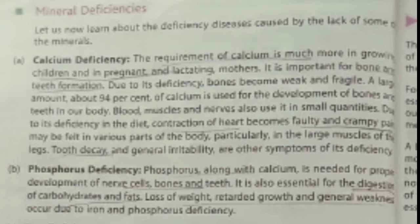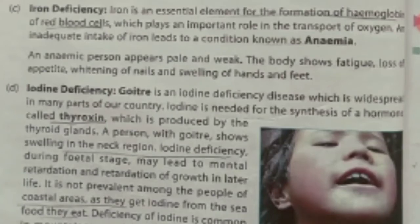Next is phosphorus deficiency. Phosphorus, along with calcium, is very important for making bones and teeth strong and for maintaining nerve cells. If you don't take phosphorus, loss of weight, retarded growth, and general weakness will occur. Next is iron deficiency. Iron helps in the formation of hemoglobin, and the red color of blood is due to hemoglobin. If you don't take iron in your diet, anemia will occur and the anemic person will appear weak, pale, and always feel tired.